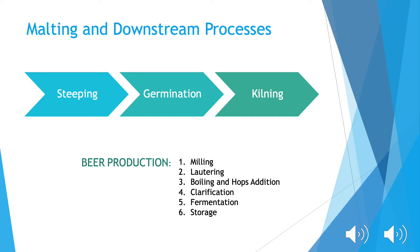Once the malting process is complete, the malted barley is mainly used for brewing beer. This process begins with milling the malt to expose its starch and then mixing it with purified water to break down the starch into sugar. Afterwards, the mixture is lautered to separate the solids from the sugary extract called wort.